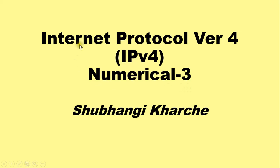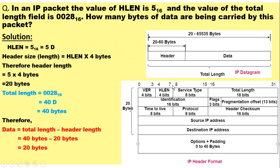Hello everyone. In this video I am going to explain an example on Internet Protocol version 4. The example says that in an IP packet, the value of HLEN is 5 in hexadecimal and the value of the total length field is 0028 in hexadecimal. How many bytes of data are being carried by this packet?